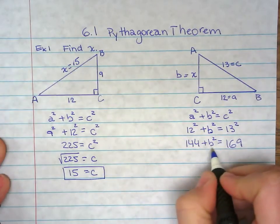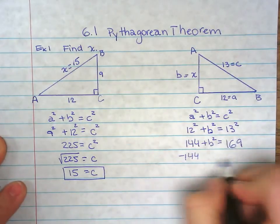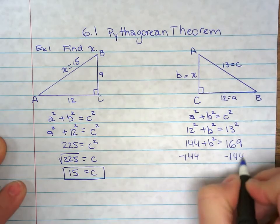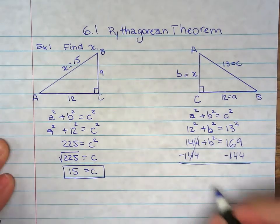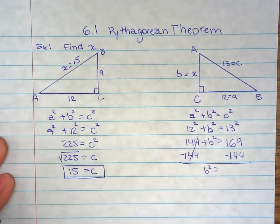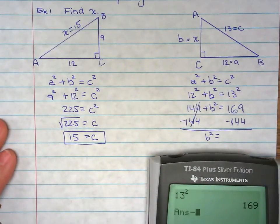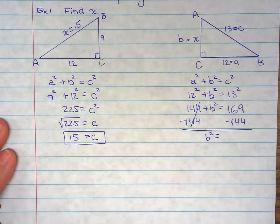Now I need to solve for b, so take away 144 from both sides. This is 0, so b² is 169 take away 144, which is 25.